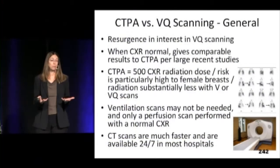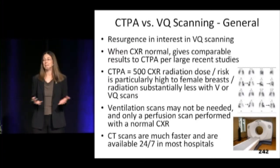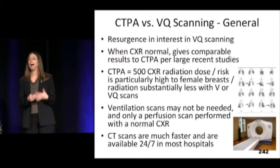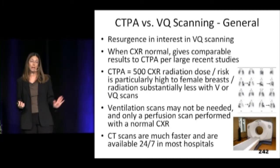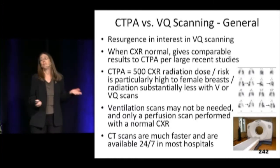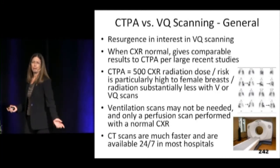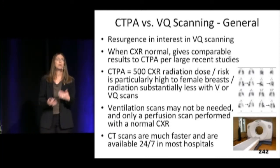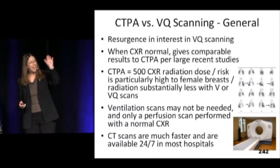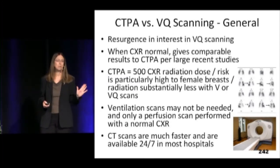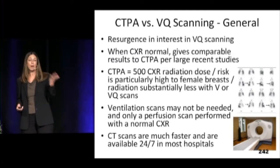If you still need to image, you have a CTPA or a VQ scan. VQ scans sound antique, but for a long time we didn't use them because we had the wonderful CT scan, except CT carries a lot of radiation that radiates breast tissue — a high-risk area for cancer in women. VQ scanning has come back into the fore. It is something you can do in somebody with a normal chest X-ray. The problem with VQ scanning is it's not as available as CT, but know that VQ scan is a reasonable alternative to CTPA with a normal chest X-ray.